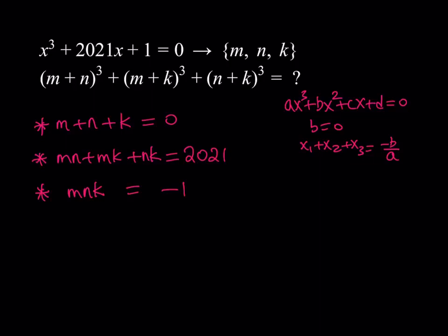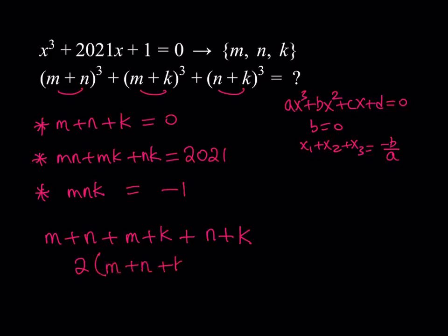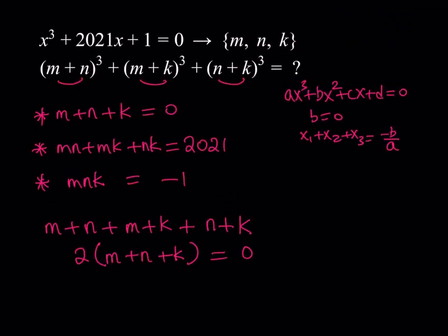Now I'm supposed to evaluate this expression using those relationships. Here's the first solution method. Notice that the base expressions — m+n, m+k, and n+k — without the cubes, give us something interesting. If you add them, you get 2 times (m + n + k). We know that m + n + k = 0, so this sum is also 0.